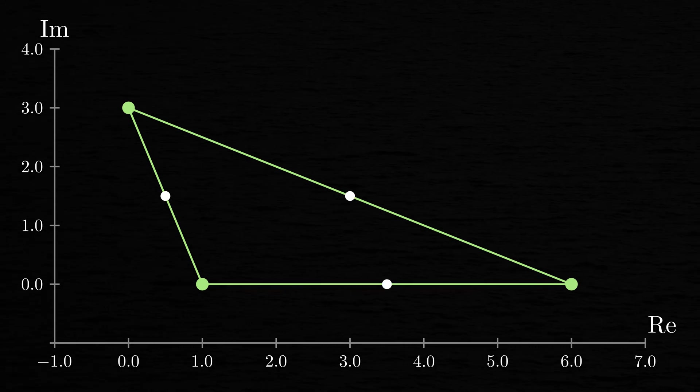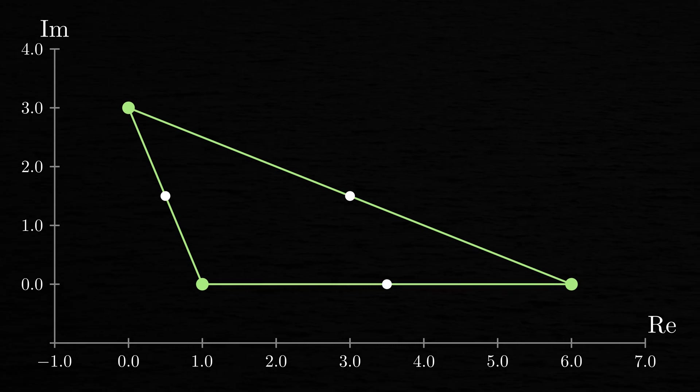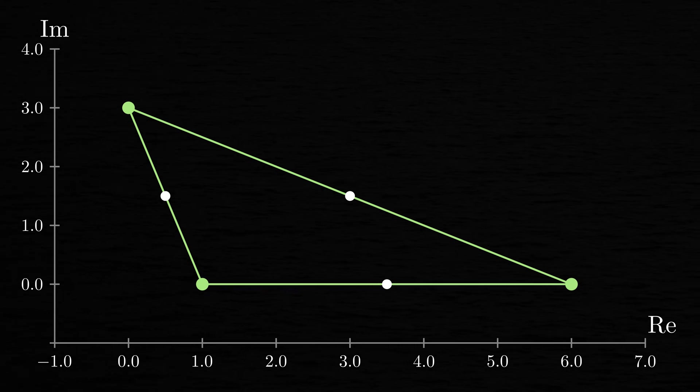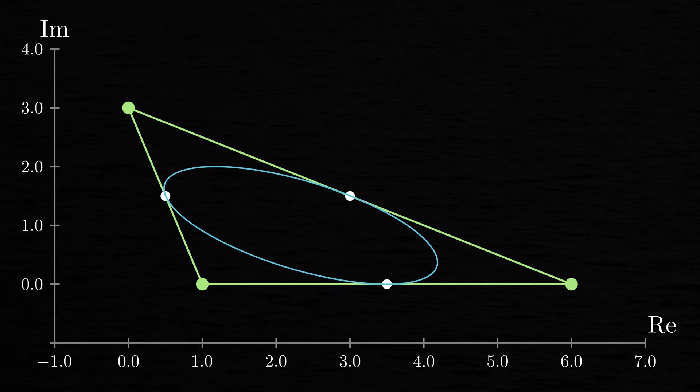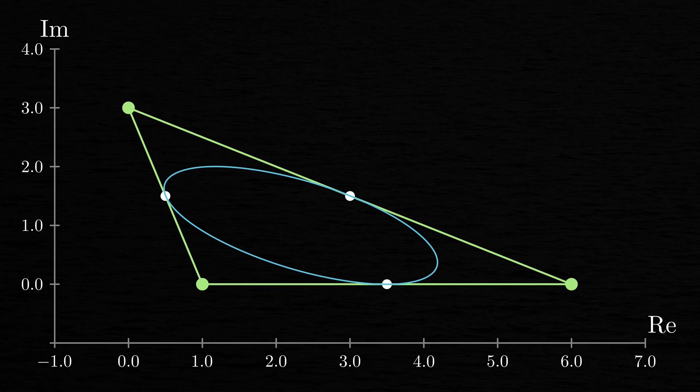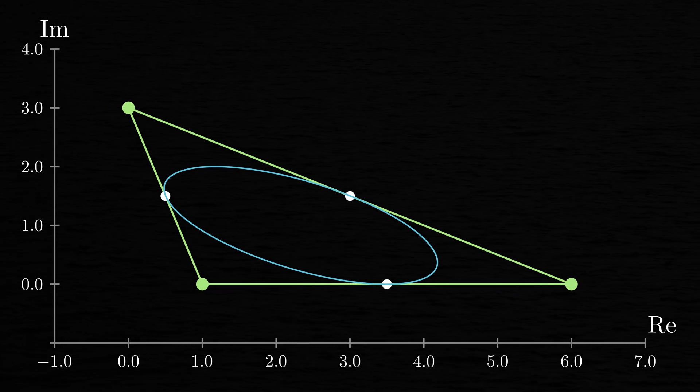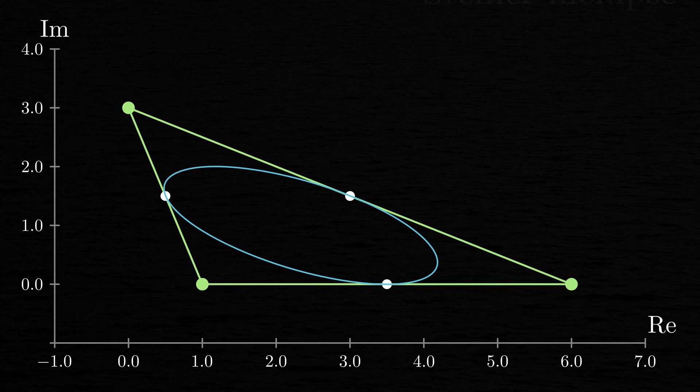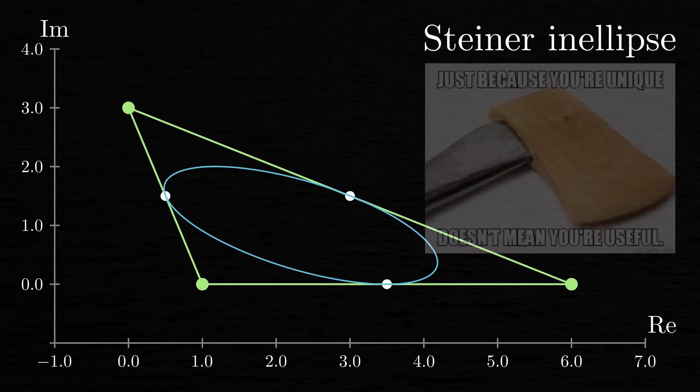Next, let's mark the midpoints of each of this triangle's sides. Here, the midpoints are shown in white. Finally, let's draw an ellipse inside this triangle that's tangent to the triangle's sides at their midpoints. It turns out that this ellipse, which is called the Steiner in ellipse, is unique.